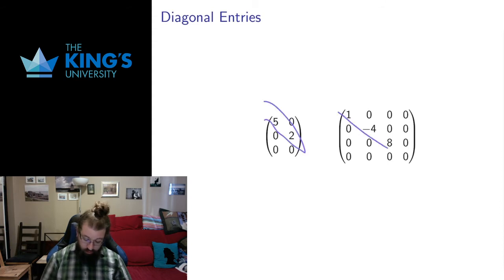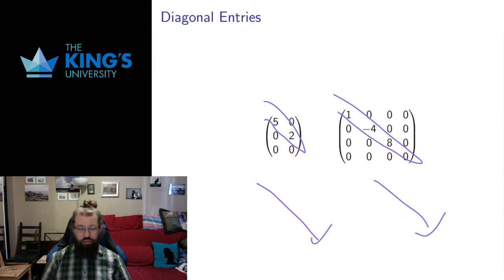Diagonal entries are entries that sit on the diagonal starting from the top left of the matrix. From the top left, draw a diagonal down. Those are called the diagonal entries, and the reason that it's top left relates to various applications of a matrix and the way we use it. You can also think of those as entries in the same row and column: row one column one, row two column two, row three column three, row four column four.